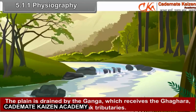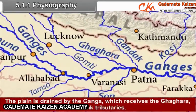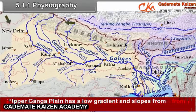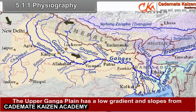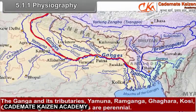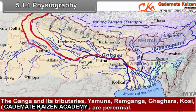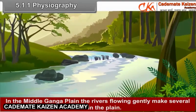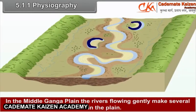The plain is drained by the Ganga, which receives the Ghagra, Gandak and Kosi as left bank tributaries. The Upper Ganga Plain has a low gradient and slopes from north-west to south-west. The Ganga and its tributaries — Yamuna, Ram Ganga, Ghagra, Kosi and Gomti — rising in the Himalayas are perennial. The Chambal River rises in the Peninsular Plateau and joins the Yamuna River. In the middle Ganga Plain, the rivers flowing gently make several meanders and oxbow lakes.